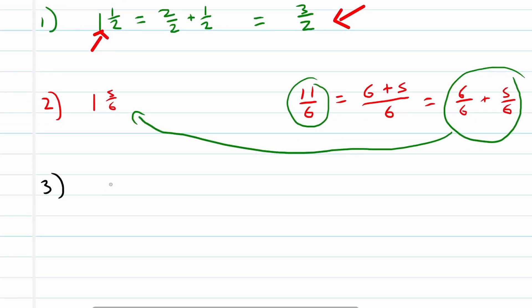Let's look at example 3 — again from a mixed number to an improper fraction. Let's take something more difficult like 3 and 2 over 5. This 3 has to be represented in terms of the denominator, which is 5. So we can say 3 times 5. What is 3 times 5? 3 times 5 is 15.